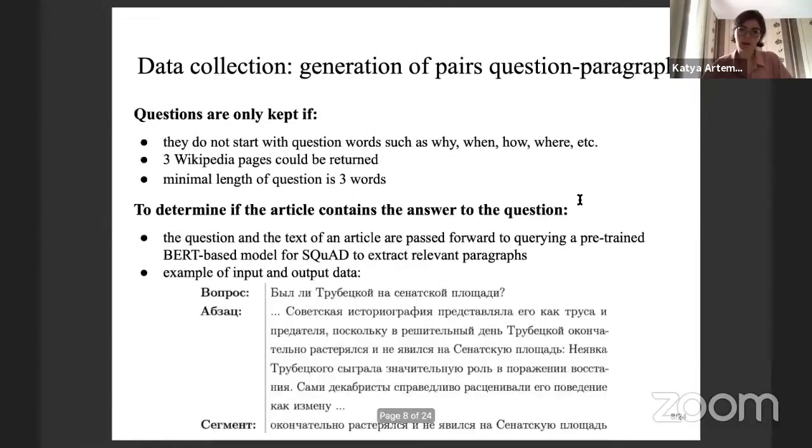We manually—not really manually, but using some regular expressions and manual filtering—we filtered these questions out. Then we went to Google API and retrieved from Google three Wikipedia pages for each question. If it was not possible to retrieve three Wikipedia pages, we thought that this question was corrupted and didn't use it further.